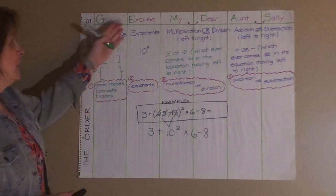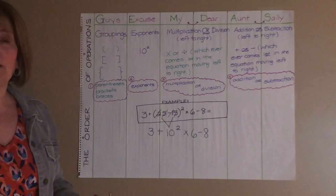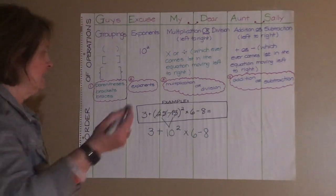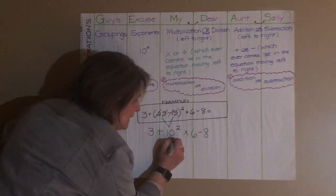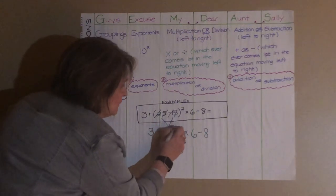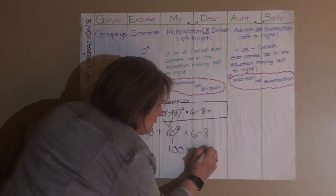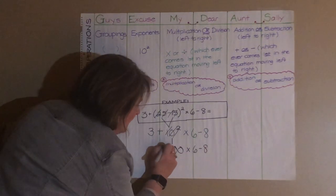There are no other groupings, so we can move on to E. Is there an exponent in this equation? Yes, there is. It's 10 to the second power. And we know that 10 to the second power is 100. So now we've done this, and we rewrite the equation exactly how it was written.